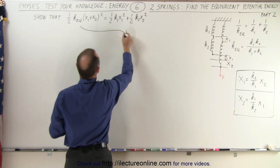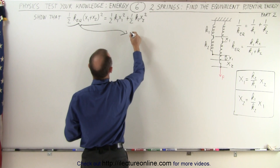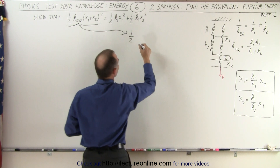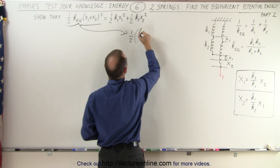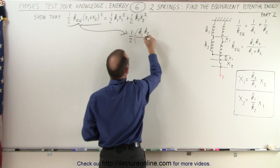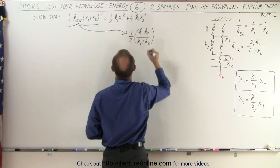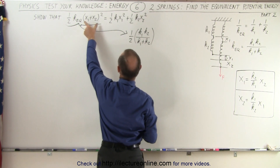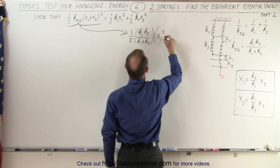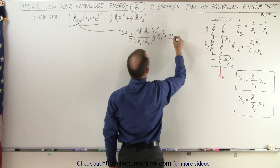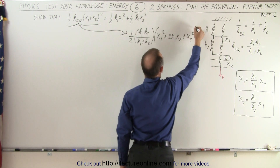We're going to take the left side of the equation and write it as one-half times the spring constant in the form k1 times k2 over k1 plus k2 — the product over the sum. Instead of writing (x1 plus x2) squared, we expand it as x1 squared plus 2x1x2 plus x2 squared.